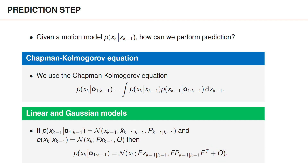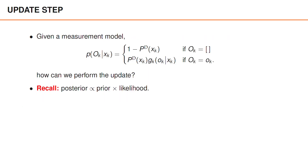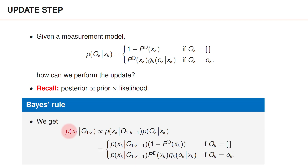The conclusion is that the prediction step is performed in a standard manner. For the update step, given a measurement model of the following form, we apply Bayes' rule, which tells us that the posterior is proportional to the prior times the likelihood. In this context, the posterior at time k is the predicted density p(x_k) given the object detections up until time k-1, times g_k of capital O_k given x_k, which is the likelihood or the measurement model.